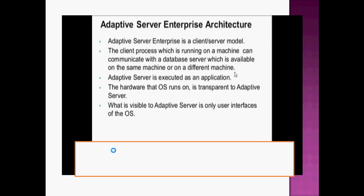The next part is adaptive server enterprise architecture — a client-server model. A client process running on one machine can communicate with the database server available on the same or a different machine. The adaptive server is executed as an application. The hardware and operating system are transparent to the adaptive server. The adaptive server provides only the user interface of the operating system to the user.